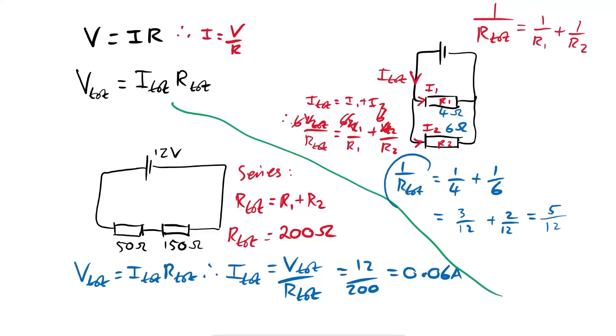That's not our answer, though, because that's one over that. So therefore, all we have to do is flip it on its head. So our total, it's just reciprocal, is equal to 12 over five. And so that's 2.4 Ohms. So that's how you find total resistance for a parallel circuit.